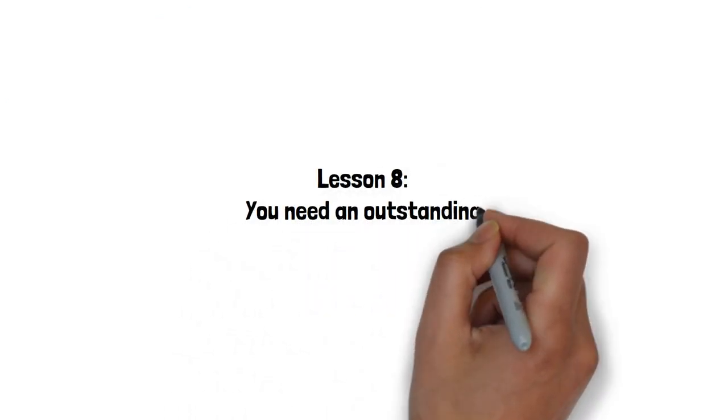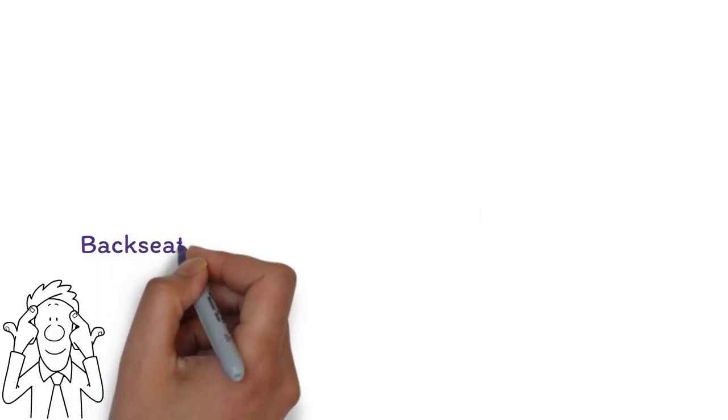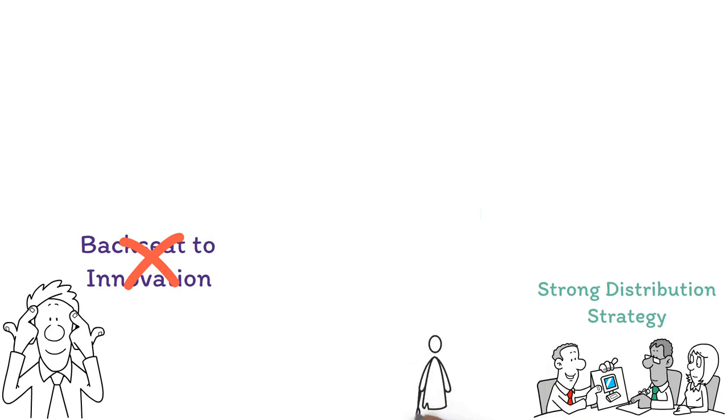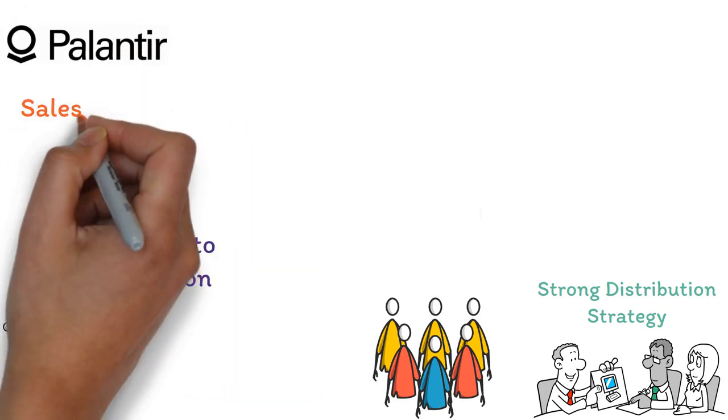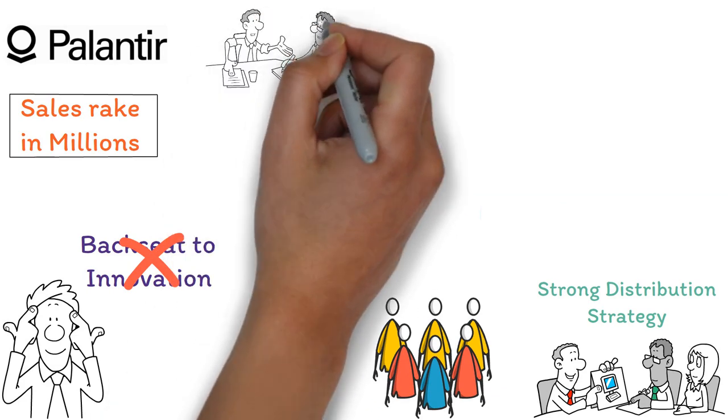Lesson 8: You need an outstanding sales strategy. For tech-focused founders, sales can sometimes take a backseat to innovation, but it shouldn't. Effectively selling your product requires a strong distribution strategy tailored to the potential value of each client. For instance, in high-ticket businesses like Palantir, where sales rake in millions, CEOs often take a direct role in sales.